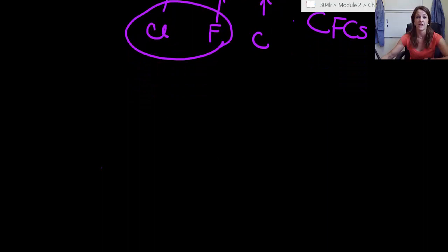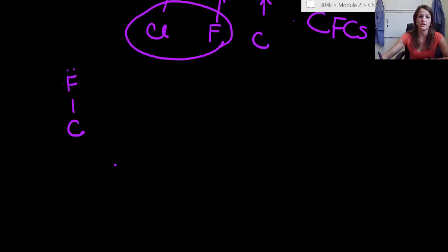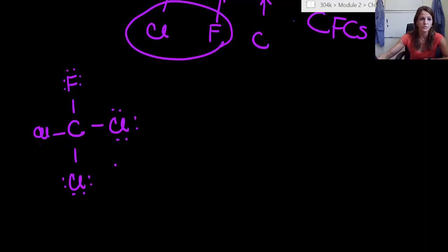Now, back to CFCs. There are two CFCs that I absolutely expect you to know. They are called Freon 11 and Freon 12. So Freon 11 has a carbon in the middle, it has one fluorine, and I'm going to draw in my lone pairs just so you know and kind of get used to them. Make sure you're doing this when you're drawing out your Lewis structures. It has three chlorines.